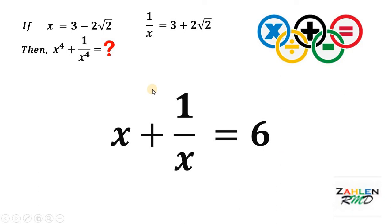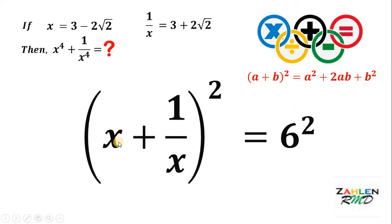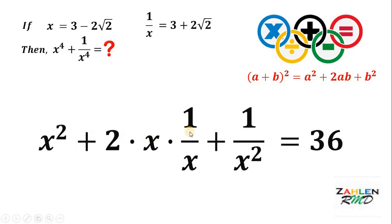At this point, we are ready to find the value of x to the fourth plus 1 over x to the fourth. Our first step is to square both sides. Take note that x plus 1 over x squared is not equal to x squared plus 1 over x squared, because if we have a plus b quantity squared, it equals a squared plus 2ab plus b squared. So, we apply this identity to expand x plus 1 over x squared. We get x squared plus 2 times x times 1 over x plus 1 over x squared, and on the right-hand side we have 6 squared, or 36.